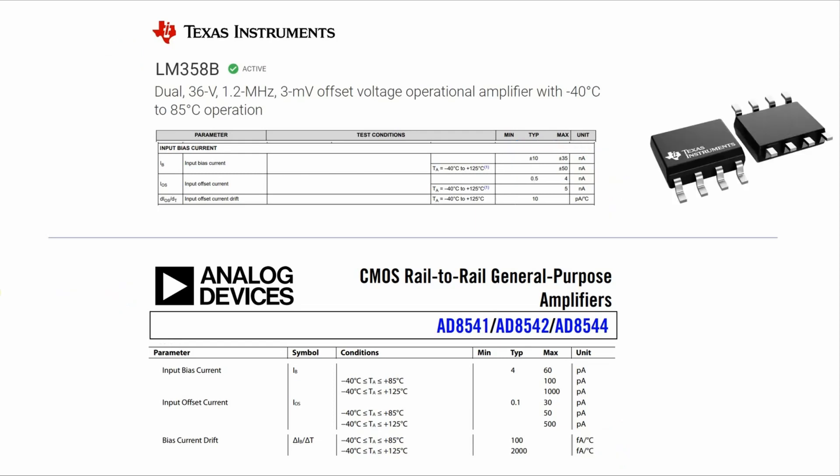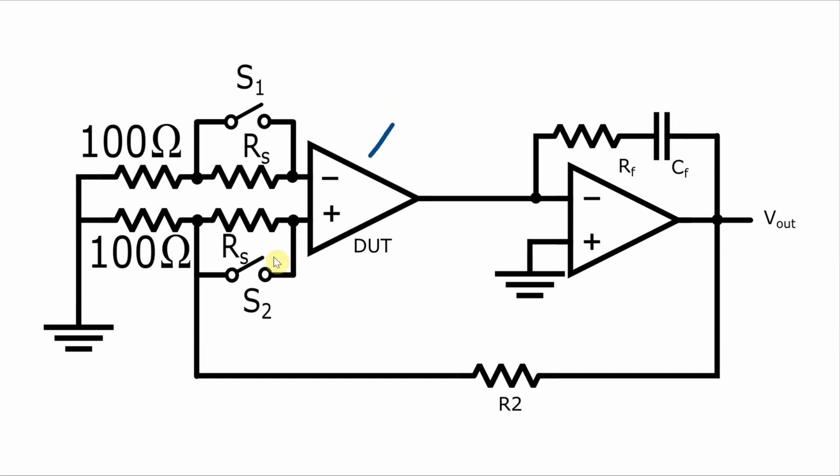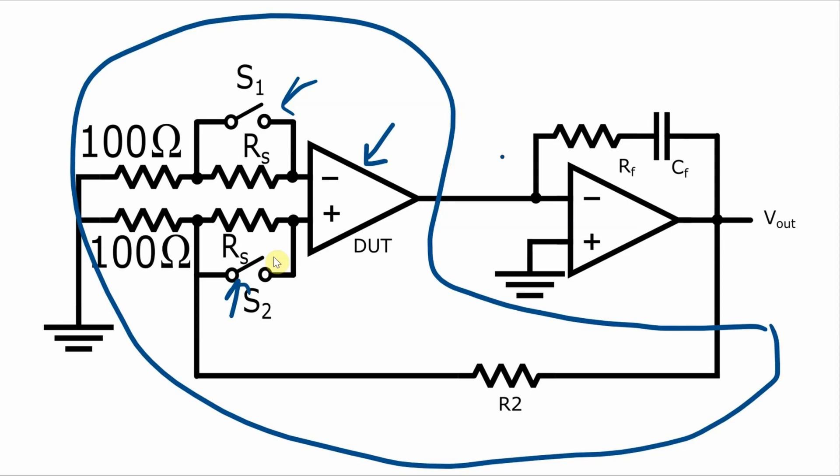If you want to know the input bias current of a particular op-amp that you have, like let's say we want to know what it is for this particular op-amp right here, you can build a fairly simple measuring circuit like this one. Here's the device under test, and these switches can be opened and closed to measure the different bias currents into the two different terminals of the device under test. This part of the circuit here is the negative feedback into the testing op-amp, and the output of this testing op-amp will be used to determine the input bias currents.